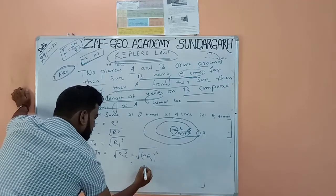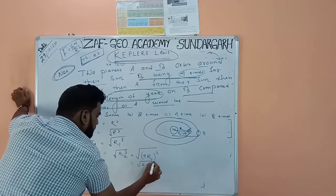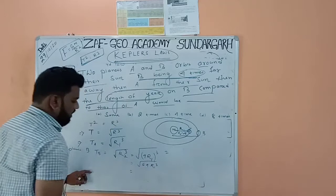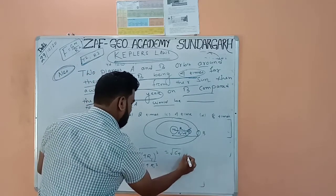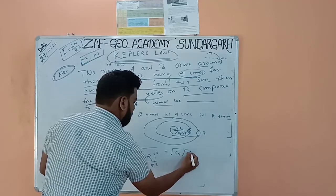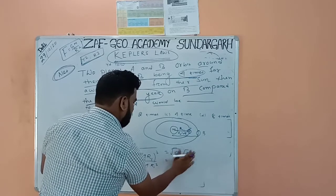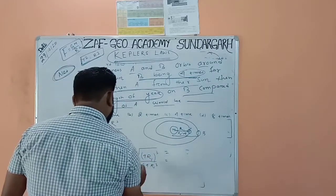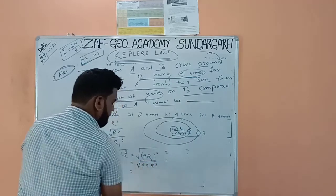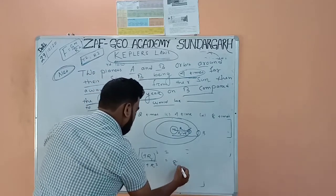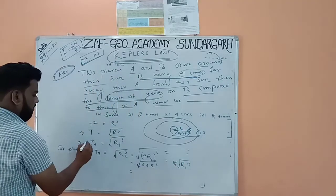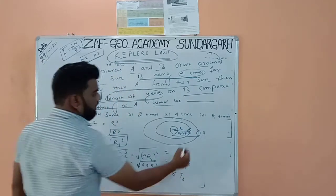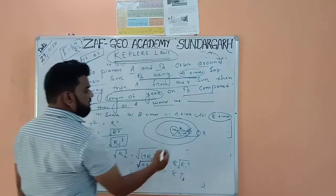Expanding: T_B = √(64·r1³). The square root of 64 is 8, so T_B = 8·√(r1³) = 8·T_A. The answer is 8 times — the length of year on planet B is eight times the length of year on planet A.